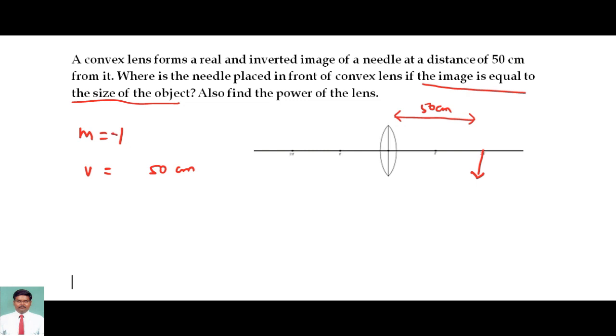And since we are measuring the distance from the optic center to the right side, the V value is going to be plus 50 cm, and here we have to calculate what is the value of U.